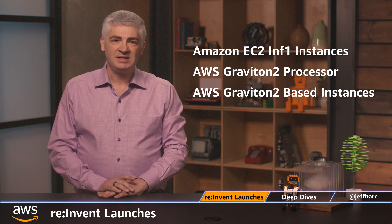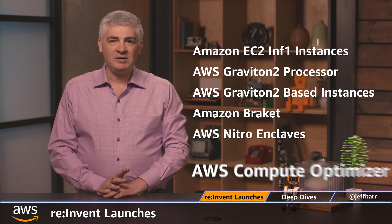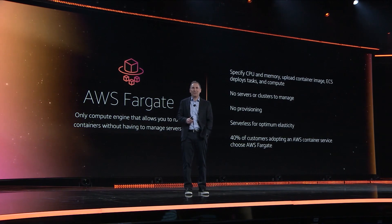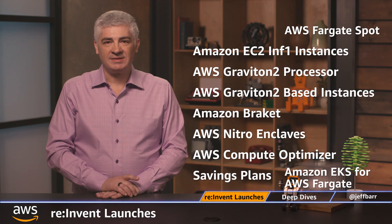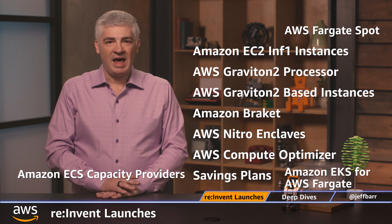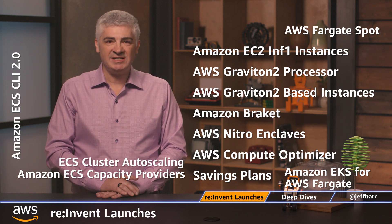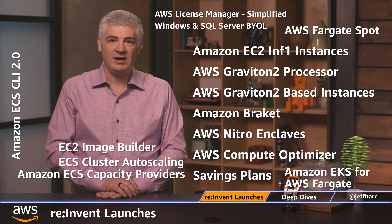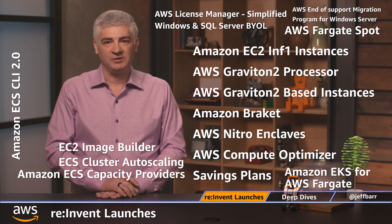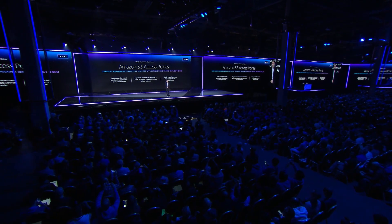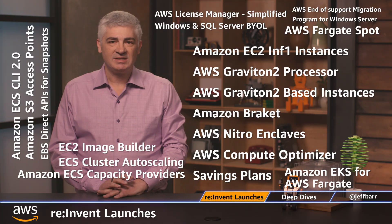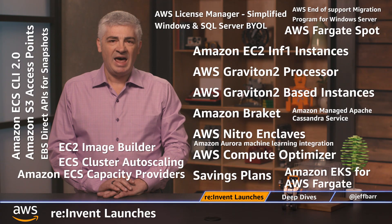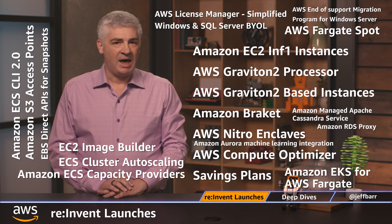All the major announcements from reInvent: EC2 Inf1 instances, the Graviton2 processor, Graviton2-based instances, Amazon Braket, AWS Nitro Enclaves, the AWS Compute Optimizer, Savings Plans, Amazon EKS for AWS Fargate, AWS Fargate Spot, Amazon ECS Capacity Providers, Amazon ECS CLI 2.0, ECS Cluster Autoscaling, EC2 Image Builder, AWS License Manager, Simplified Windows and SQL Server BYOL, AWS End of Support Migration Program for Windows Server, Amazon S3 Access Points, EBS Direct APIs for Snapshots, Amazon Managed Apache Cassandra Service, Amazon Aurora Machine Learning Integration, Amazon RDS Proxy.